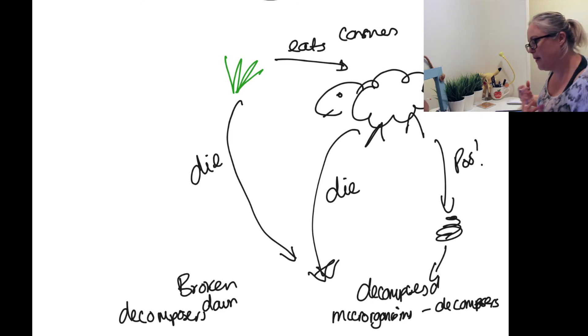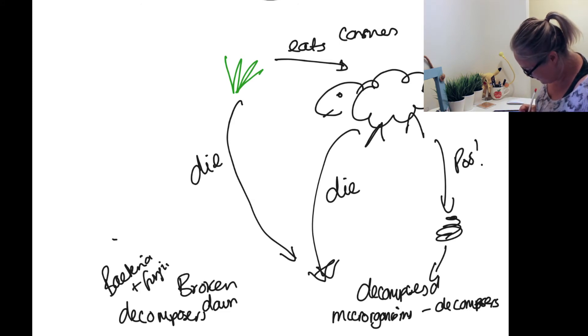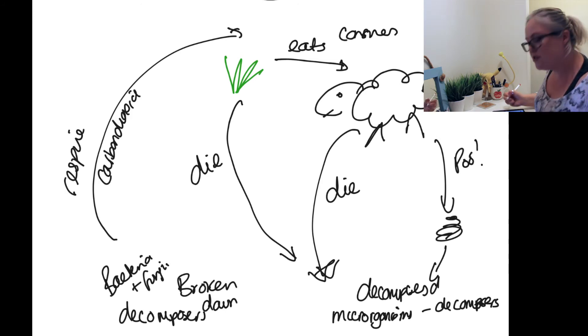Now the decomposers are bacteria and fungi, and they need to respire. So they will release carbon dioxide back into the environment, which links nicely with the carbon cycle. So have a little look at that video. They release carbon dioxide back into the environment, which our plants will take in through photosynthesis.